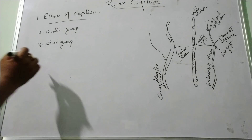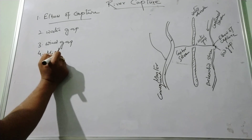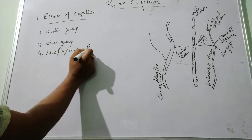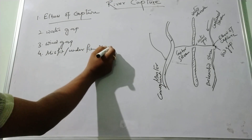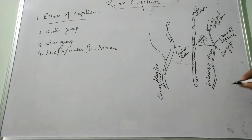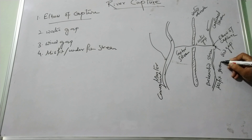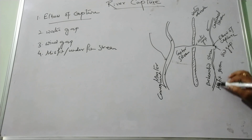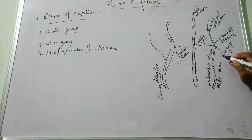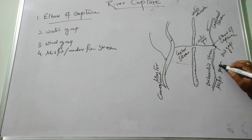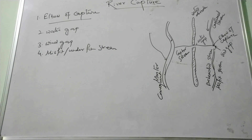And the last evidence is the misfit or underfit stream. This is the lower portion of the capture stream — the river which has lost its headwater will be much reduced in volume. Therefore, its valley seems too large, and the stream is said to be underfit. And if it is too large, then it is known as overfit. These are the basics about river capture, which is one of the important aspects in physical geography and is formed in the youthful stage of the river. Thank you for watching this video.